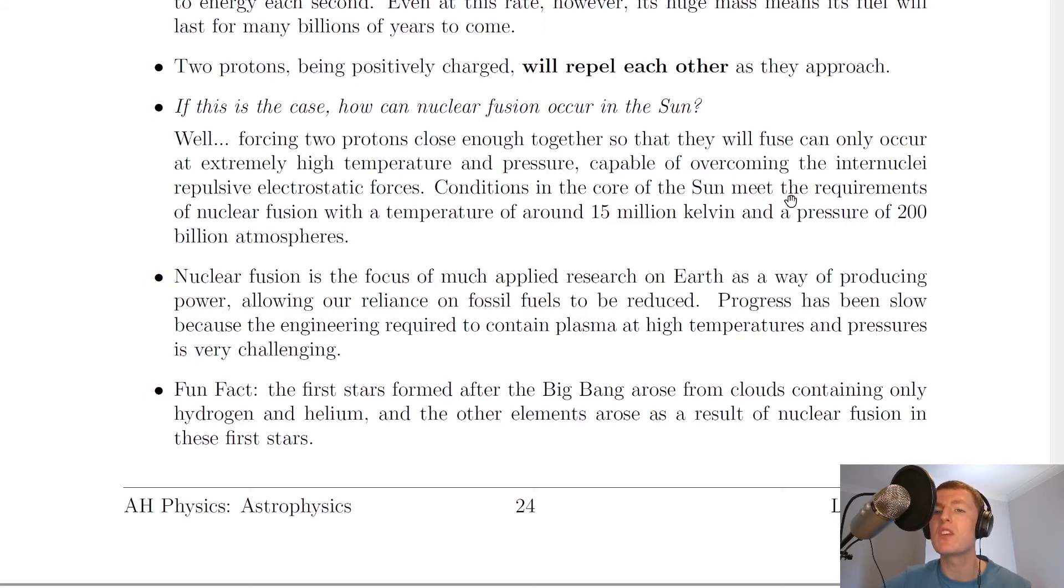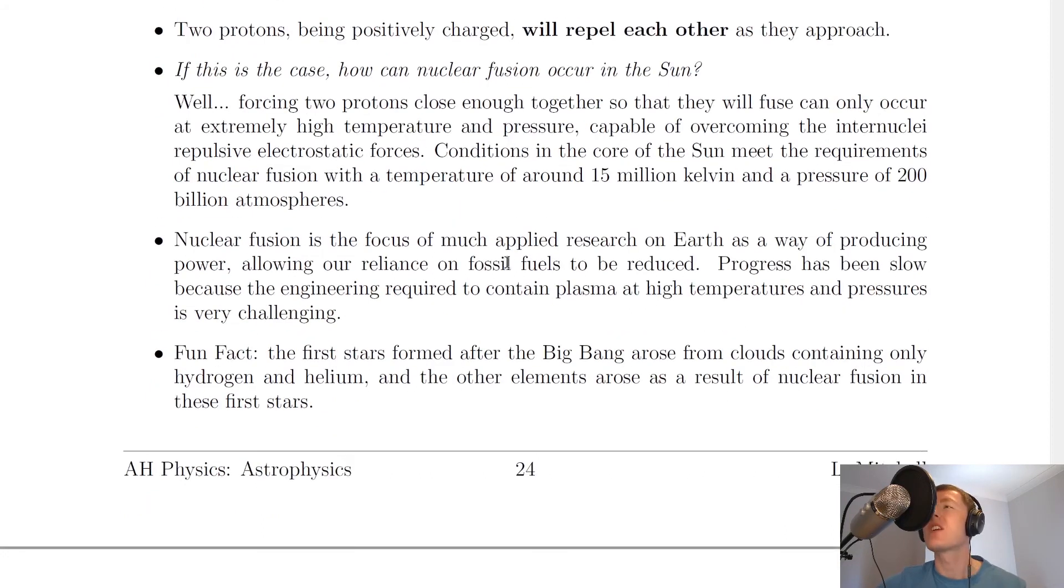Conditions in the core of the sun meet the requirements of nuclear fusion, with a temperature of around 15 million kelvin and a pressure of 200 billion atmospheres. There's a high enough temperature and pressure for fusion to occur, and that's going to squeeze the two protons together to form the deuterium in stage one.